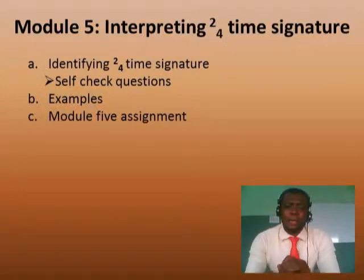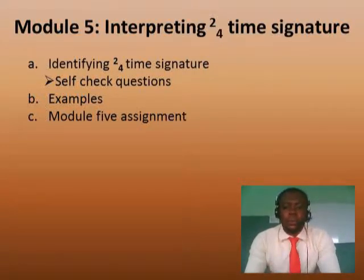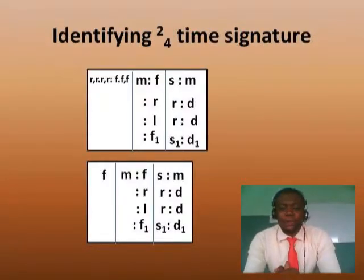First off, we are going to learn how to identify music scores that are written in two-four time signature, assuming it is not identified there. Then we are going to go to some examples, then we do our module five assignment.